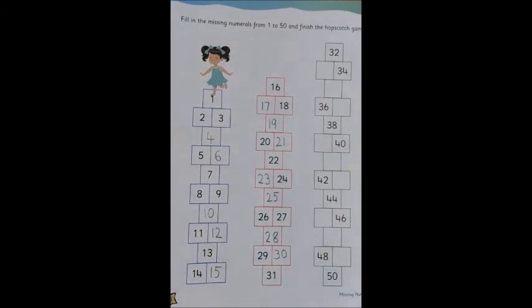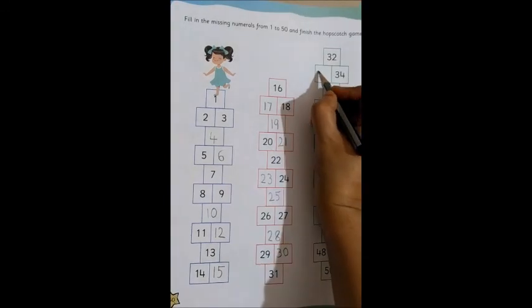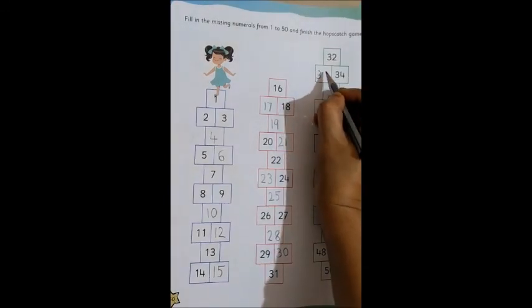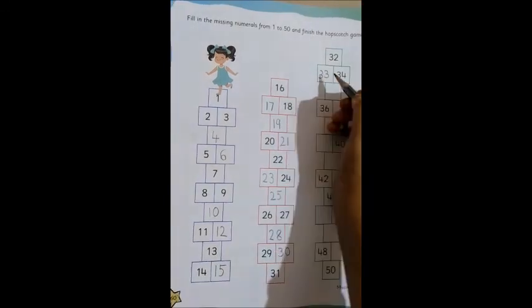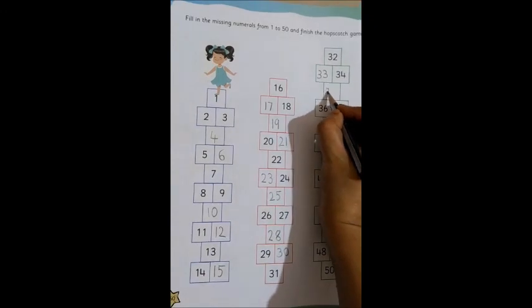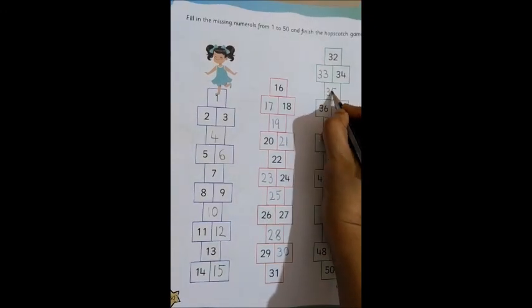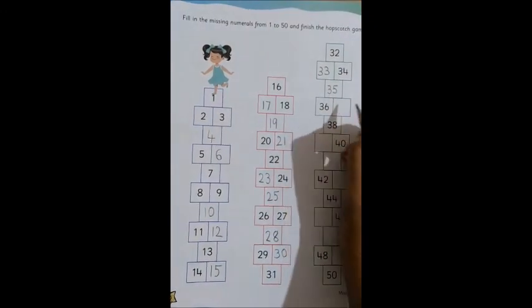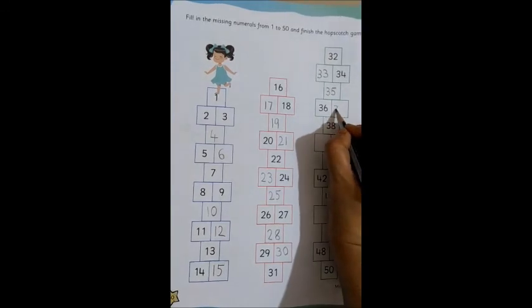Moving on to the next one. 31 is written out here. In the next box, 32 is written. So, what will come after 32? 33. 3, 3. 34 is there, what will come after 34? 35. 36 is there, then the next number will be 37.